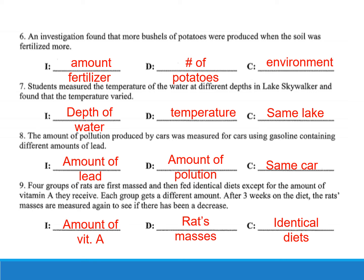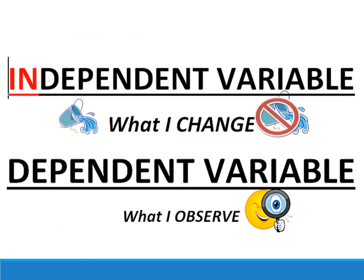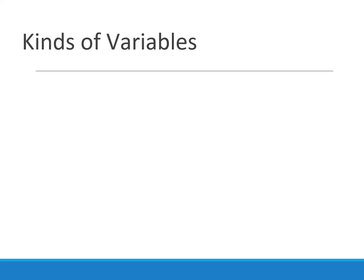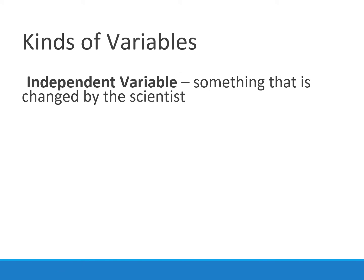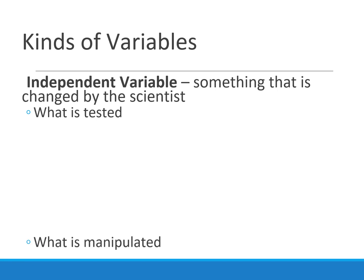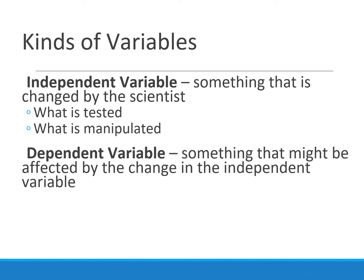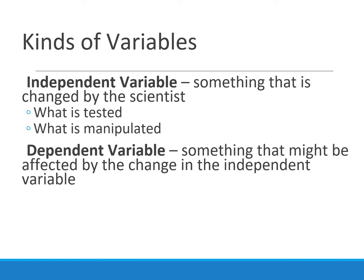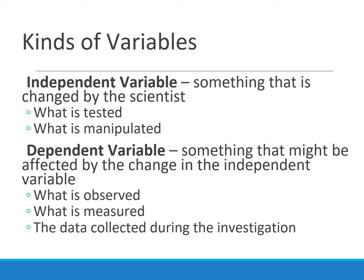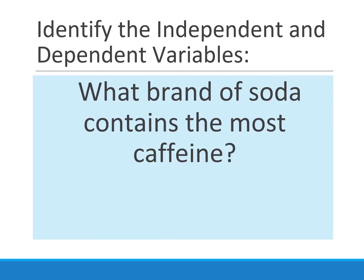Turn this assignment in and get ready for the review. There's a visual that reminds you of the difference between these two: the independent variable is what I change, the dependent variable is what I observe. Let's review those definitions again: the independent variable is something changed by the scientist — it's what's tested and manipulated. The dependent variable is something that might be affected by the independent variable — it's what we observe, measure, and the data we collect.